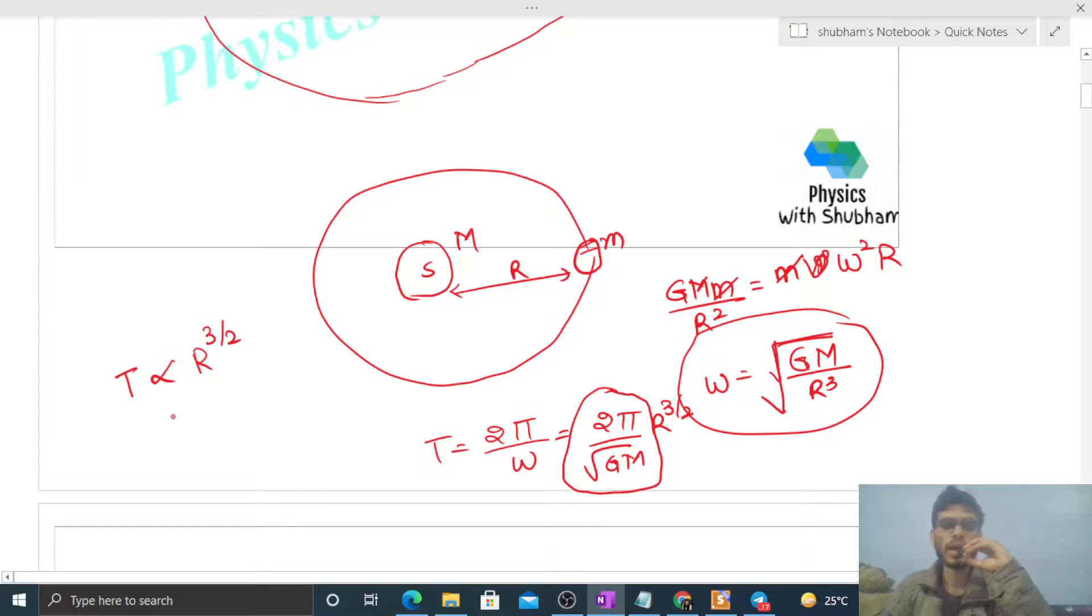So from here you can see that time period is directly proportional to r rise to the power 3 by 2. We also write this as time period square is directly proportional to radius cube. That is Kepler's law.